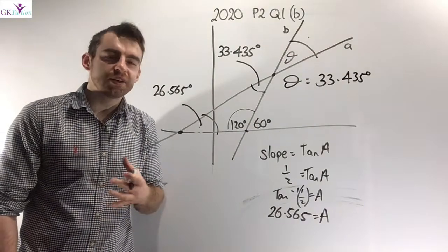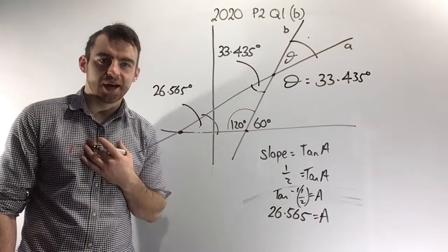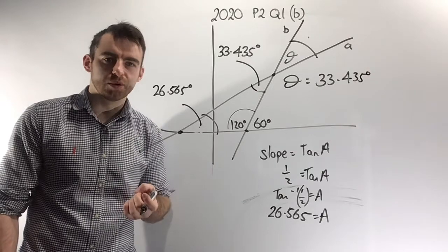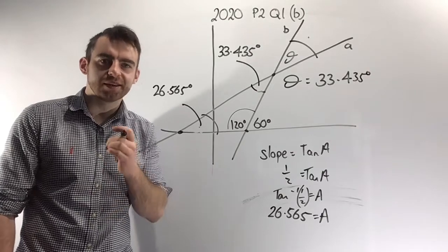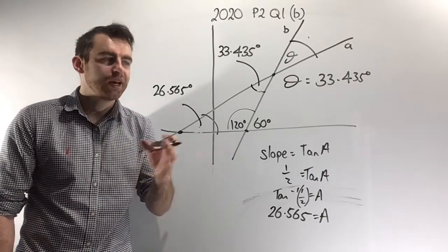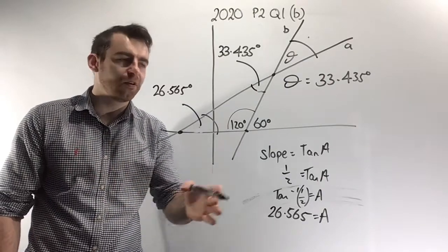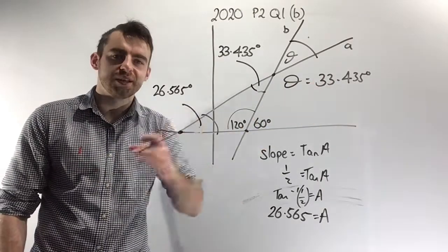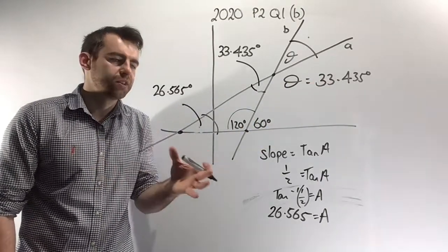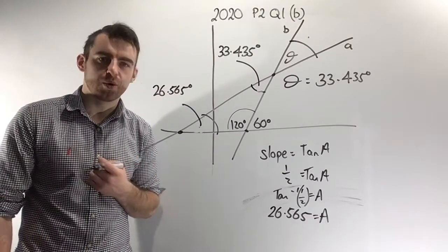You didn't necessarily have to do it that way. For most students the first instinct would be to use the formula from coordinate geometry for the angle between two lines — and if you did it like that, that's fine, as long as you get the same answer. This geometric method is just a little bit easier and quicker.